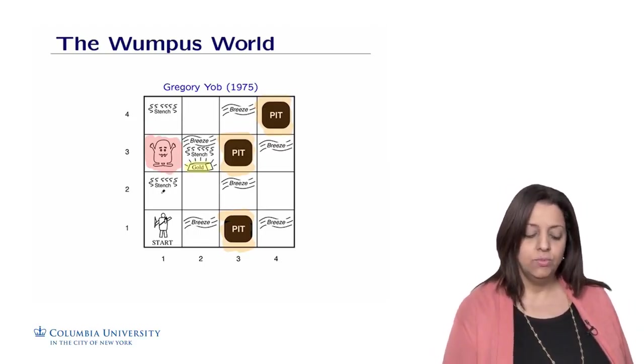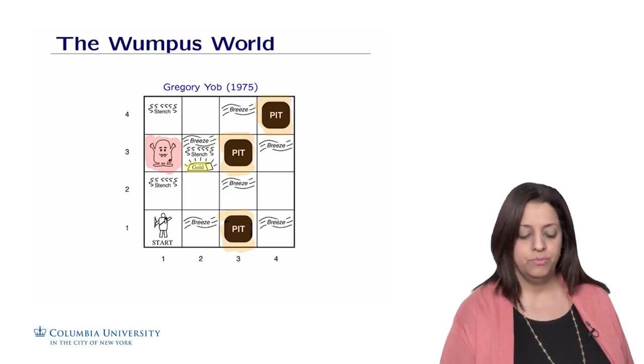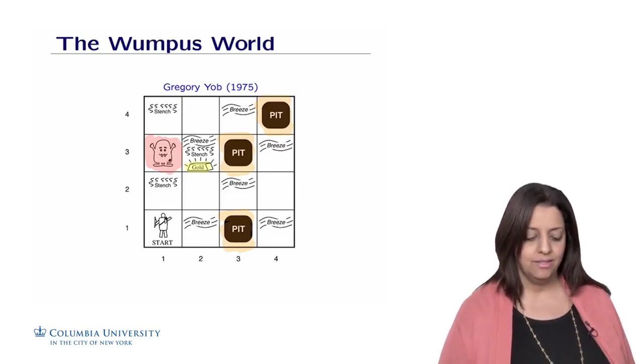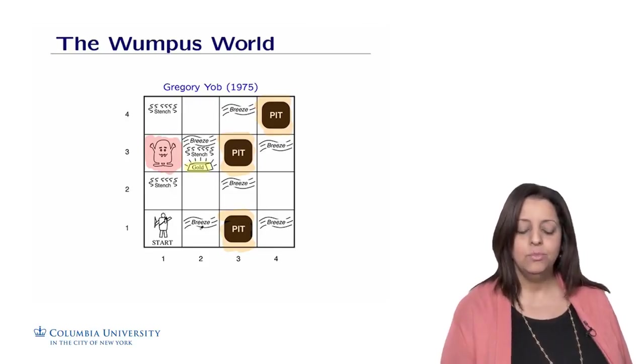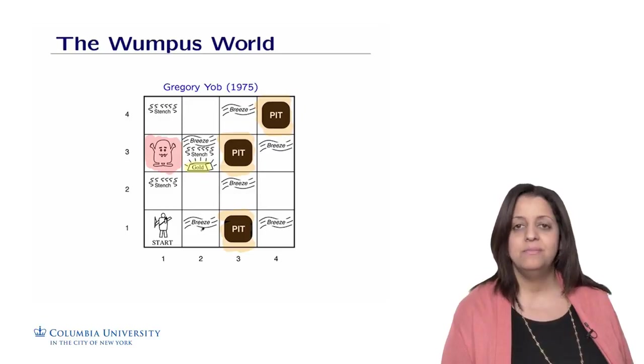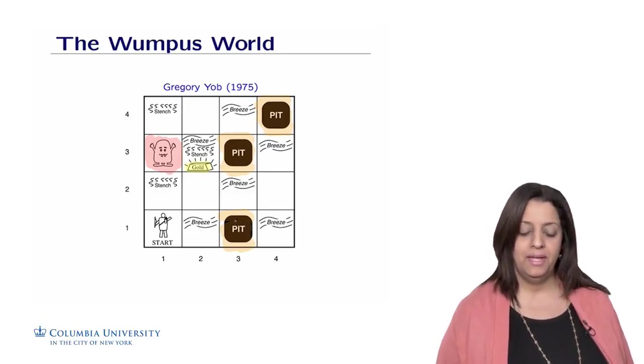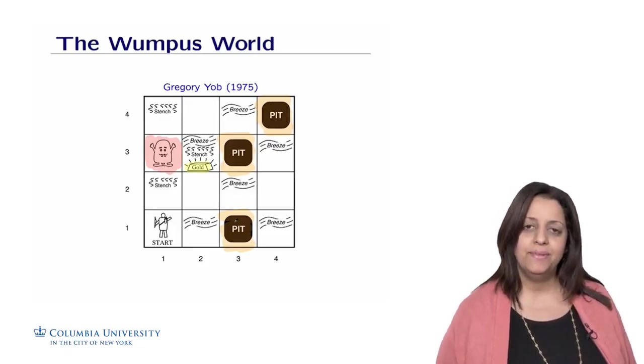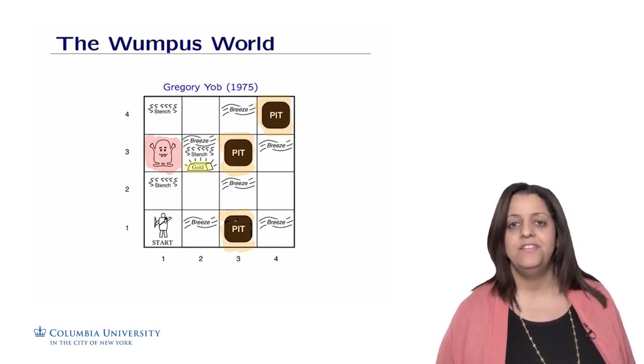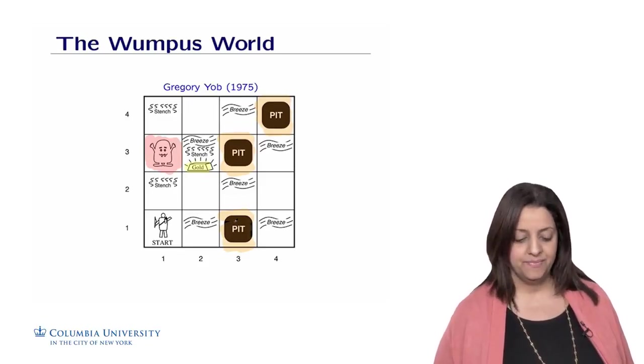There are some other components which help the agent navigate in the cave. If the agent is in a room that is close to a beast room or Wumpus room, this room will be smelly, so it has some stench. If the agent moves to a room in which there is some breeze, it means that there is some next room that has some pits. So the pits emit some breeze. There are some percepts that can help the agent navigate without being eaten or falling into the pits.